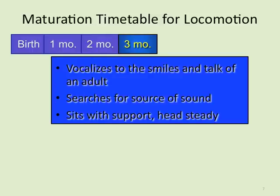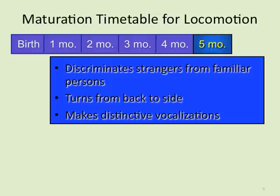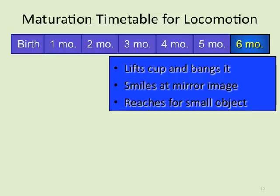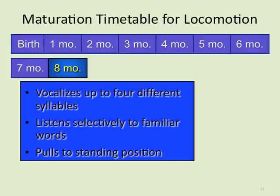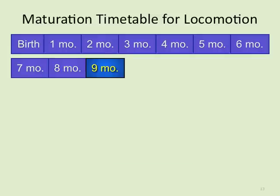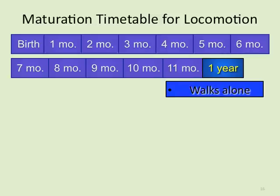At three months, babies can vocalize through smiles, search for sources of sound, and sit with support with head steady. Month four: gaze follows a dangling or moving object; sits with slight support. Month five: discriminates strangers from familiar persons, turns from back to side, makes distinctive vocalizations. Month six: lifts a cup and bangs it, smiles at a mirror image, reaches for small objects. Month seven: playful response to mirror, sits alone steadily. Month eight: vocalizes up to four different syllables, listens selectively to familiar words, pulls into standing position. Month nine onward leads to patty-cake and eventually standing alone, with walking alone by one year.